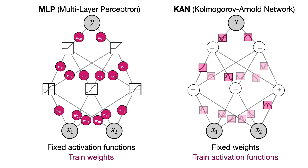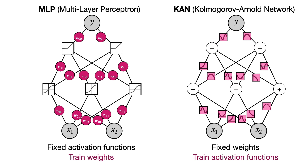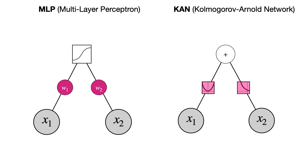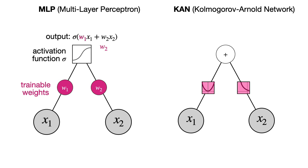A more accurate drawing of the architecture shows that in the nodes we have plus signs, meaning everything that comes to the node gets added with coefficients of one, and on the edges we have functions — everything that goes from one node to the next passes through the function. Focusing on one particular node: on the left, in a multilayer perceptron, the output is sigmoid of w1*x1 plus w2*x2, assuming we picked sigmoid as the activation function. The inputs are x1 and x2, and the weights w1 and w2 are the trainable parameters we optimize.